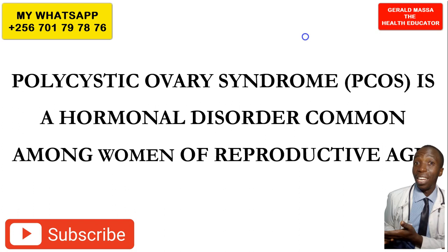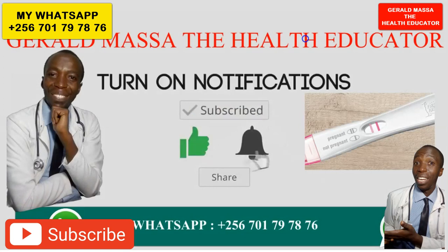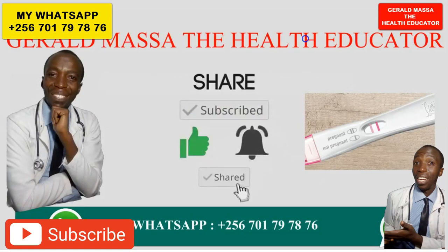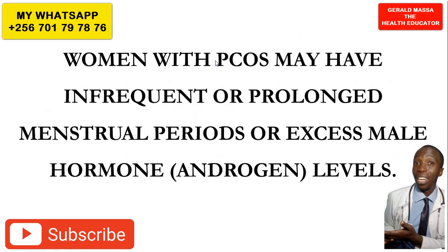Polycystic ovarian syndrome is a condition which is very common in women of reproductive age. Normally there are some tests which can be done to discover whether you have polycystic ovarian syndrome or not. We are talking about the effects of polycystic ovarian syndrome on ovulation.